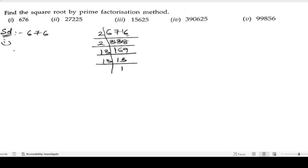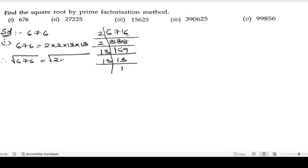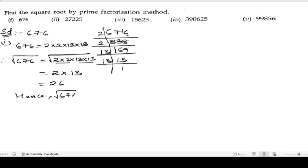So we can write 676 equals 2 into 2 into 13 into 13. Therefore, the square root of 676 equals the square root of 2 into 2 into 13 into 13. The numbers present twice come out single, so it is 2 into 13 equals 26. Hence, the square root of 676 is 26.